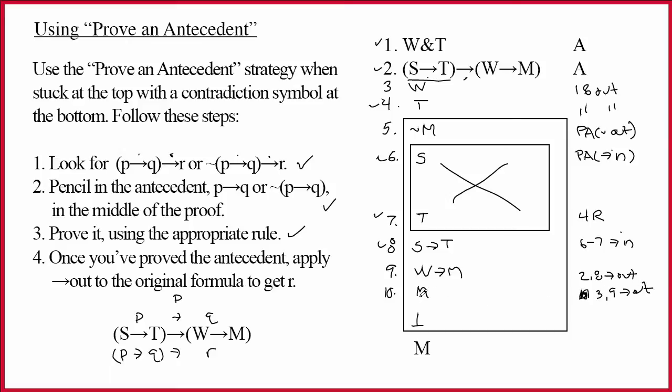And now, I have a contradiction of M and tilde M. And I'll put those together. M ampersand tilde M. So that would be five, ten, ampersand in. And now, on twelve, the entire box. Five through eleven, tilde out. And the proof is complete.